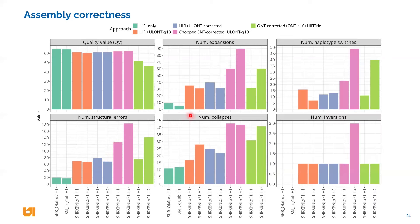All types of errors increase: expansions, collapses, haplotype switches — and you have zero haplotype switch errors in haploid assemblies by definition. Inversions also increase. Nanopore reads tend to give a bit less correct assemblies.